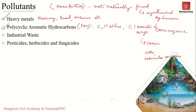Another significant cause of soil pollution is industrial waste. The discharge of industrial waste — such as dioxins, PCBs (polychlorinated biphenyls), and industrial solvents — directly into soil without any kind of containment can result in soil pollution.